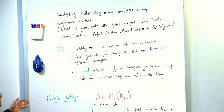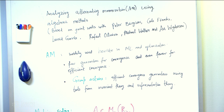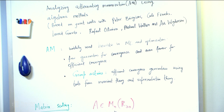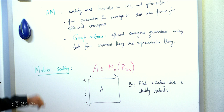Alternating minimization is a widely used heuristic in machine learning and optimization, and there are very few guarantees for when this algorithm converges to the optimal solution, and even fewer guarantees when it converges in a polynomial number of iterations. In this talk we'll see that in the setting of group actions, we can prove efficient convergence guarantees using tools from invariant theory and representation theory.